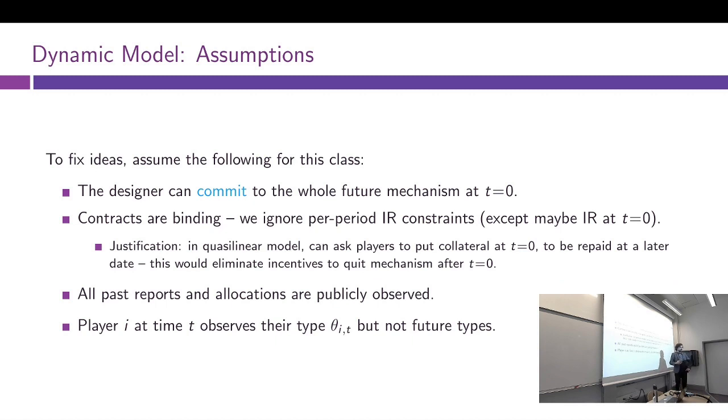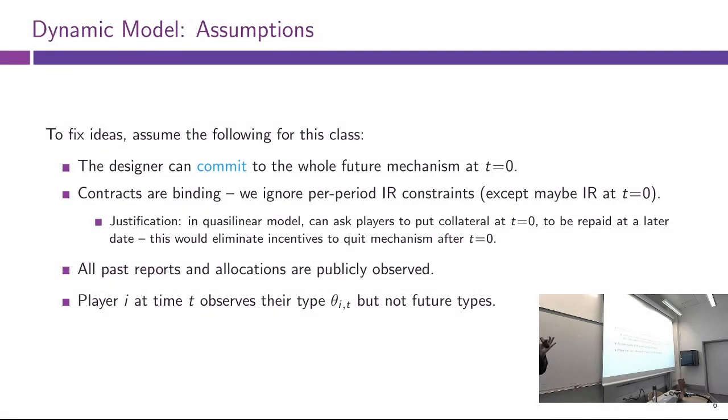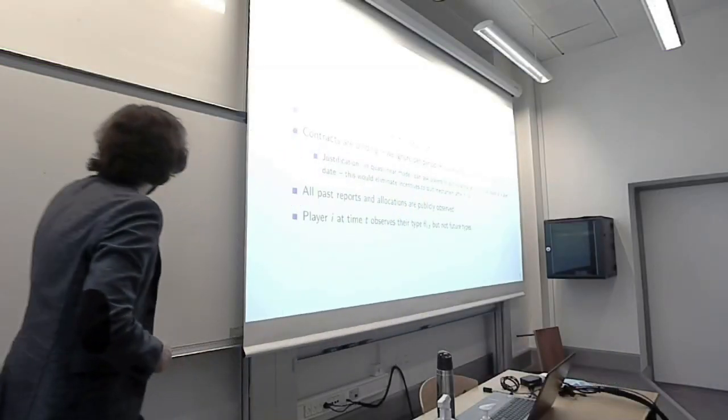Another thing related to the principal's commitment to the mechanism: we will assume that contracts are binding, meaning that the players are also committed to the mechanism once they decide to participate in the mechanism at time zero. Meaning that if we care about IR constraints, we will only look at IR constraints at time zero. There is a relatively simple justification to that, which is you can ask the players to make some deposits, to put collateral when they decide to participate in the mechanism, which would be enough to retain them at all future periods. If the player decides to leave the mechanism, they will forfeit this collateral, they will leave this deposit to the principal. So this is kind of a cheat to easily ensure IR in all future periods.